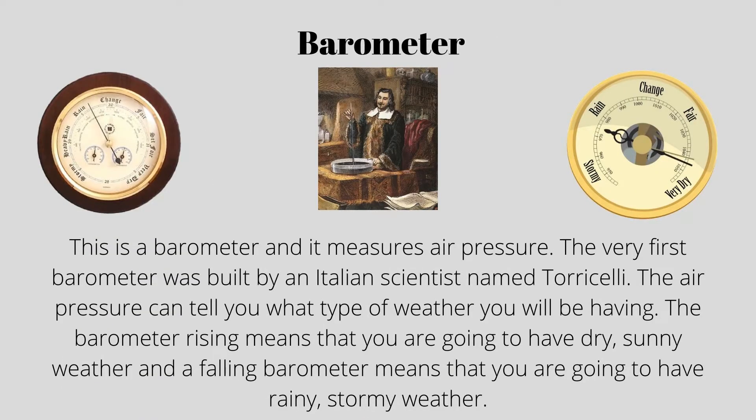This is a barometer, and it measures air pressure. The very first barometer was built by an Italian scientist named Torricelli. The air pressure can tell you what type of weather you will be having. A rising barometer means that you are going to have dry, sunny weather, and a falling barometer means that you are going to have rainy, stormy weather.